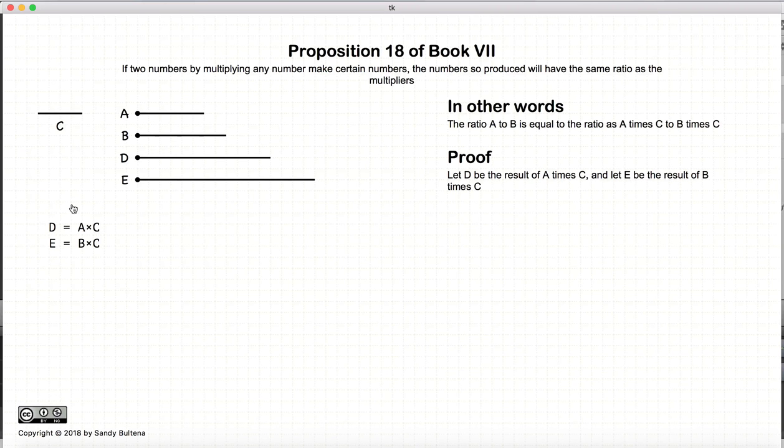So let's prove this. Let D be equal to A multiplied by C, and E equal to B multiplied by C.